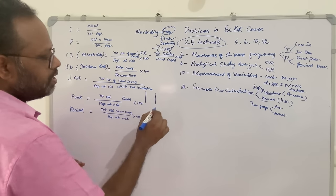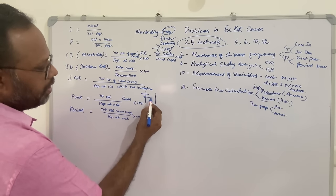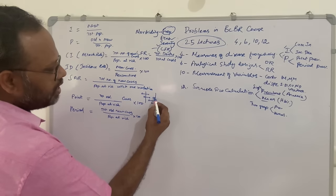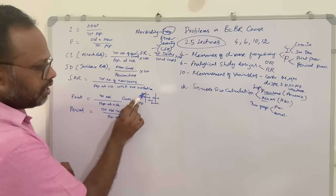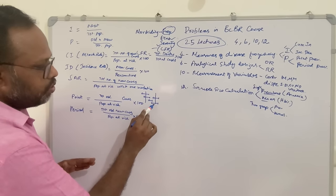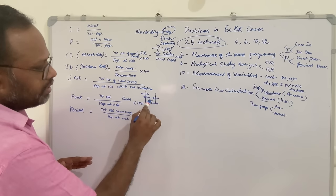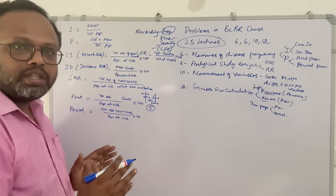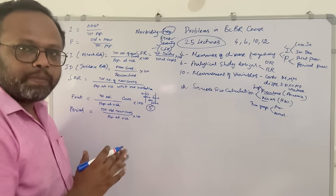Period prevalence is the total number of old and new cases during the period divided by population at risk. Suppose we have two time intervals with cases being diagnosed and cured at different points: the point prevalence at a given moment might be 2, but the period prevalence would include all 5 cases that occurred during the observation window. You must include all cases which happened during that time and also the old existing cases for period prevalence calculation.